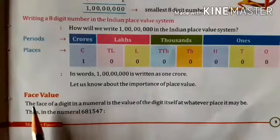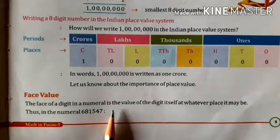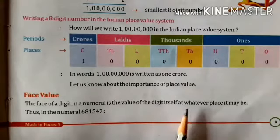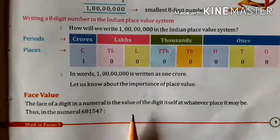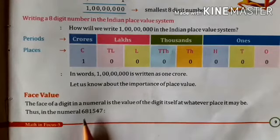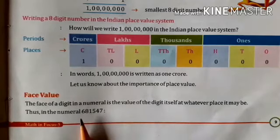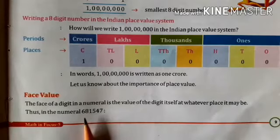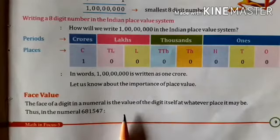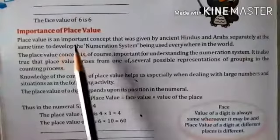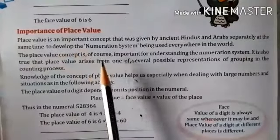Now we will discuss about face value. The face value of a digit in a numeral is the value of the digit itself, at whatever place it may be. So face value is the value of the digit itself. In 6,81,547: the face value of 6 is 6, the face value of 8 is 8, the face value of 1 is 1, the face value of 5 is 5, the face value of 4 is 4, and the face value of 7 is 7.